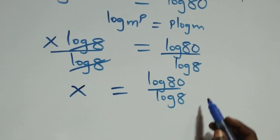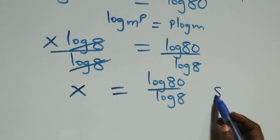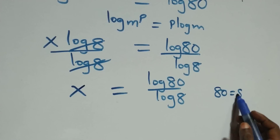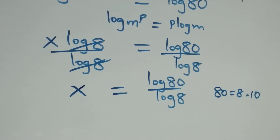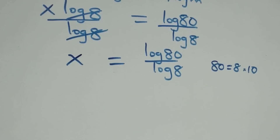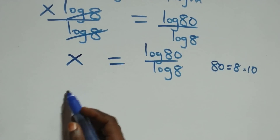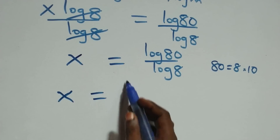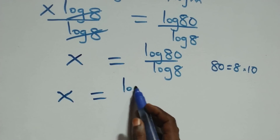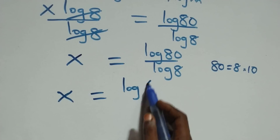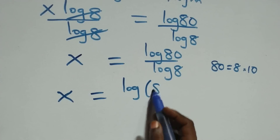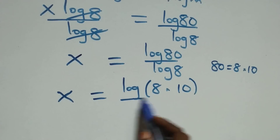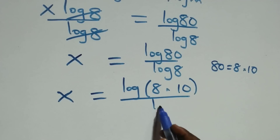From here we can express 80 as 8 times 10, which means x equals log(8 × 10) over log 8.